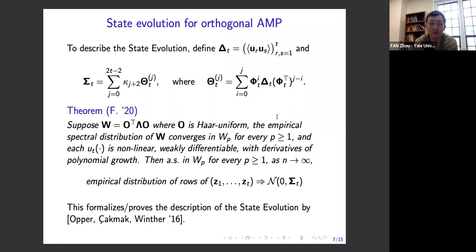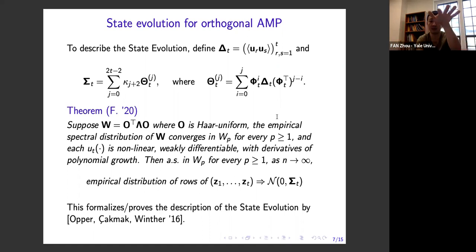The result we obtained is the following. Suppose W has Haar-uniform eigenvectors O, and the empirical spectral law of W converges in Wasserstein-p for every order p ≥ 1. And every function applied in AMP is nonlinear, weakly differentiable, and has derivatives of at most polynomial growth. Then almost surely in W_p for every order p ≥ 1, the empirical distribution of iterates z has a Gaussian limit. Specifically, the first T iterations z_1 through z_T stacked as rows in R^T have a T-dimensional Gaussian limit with covariance exactly given by sigma. This result is a rigorous proof of the state evolution description obtained non-rigorously by Opper, Cakmak, and Winther in 2016.